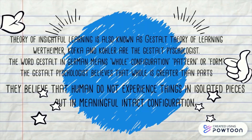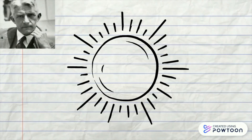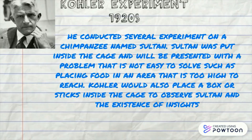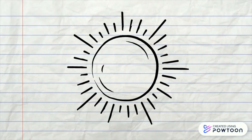To understand more clearly, let us briefly look into the experiment behind the theory. One of the Gestalt psychologists named Köhler conducted several experiments on a chimpanzee named Sultan. Sultan was put inside a cage and presented with a problem that is not easy to solve, such as placing food in an area that is too high to reach. Köhler would also place a box or sticks inside the cage to observe Sultan and the existence of insights.